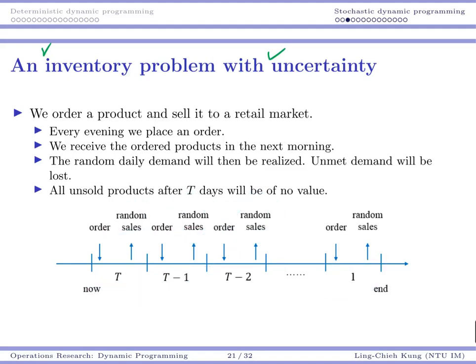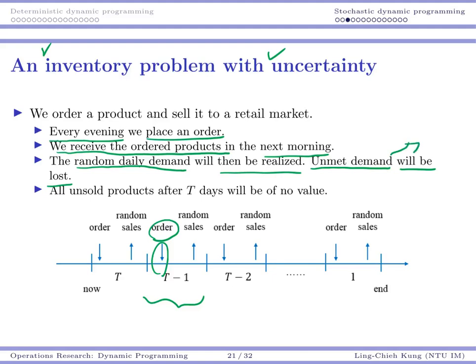Let's consider the random demand. Every evening we place an order. Once we have that, we receive the ordered products the next morning. In each period we get replenishment at the beginning of that day. Random daily demand will then realize throughout the day. If we can satisfy some demand we earn money, but unmet demand will be lost. For example, if one day I have 10 units on hand but 12 customers come, two of them cannot be served and they will just disappear. I have no way to call them back and give them products late.